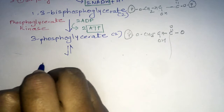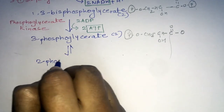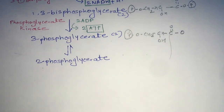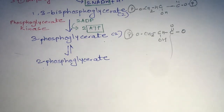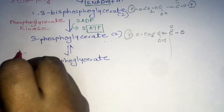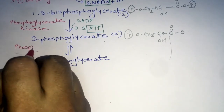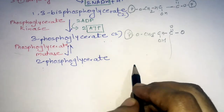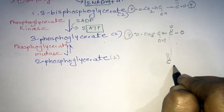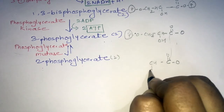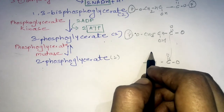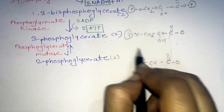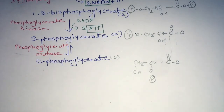Now the phosphate group attached to the third carbon will be shifted to the second carbon, and that molecule is called 2-phosphoglycerate. This reaction is catalyzed by phosphoglycerate mutase, and it is a reversible reaction. In 3-phosphoglycerate the phosphate is attached to the third carbon, while in 2-phosphoglycerate it is attached to the second carbon.